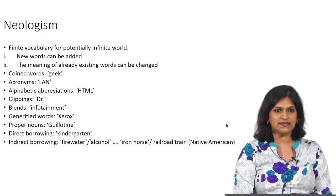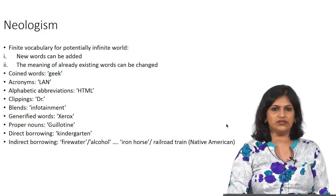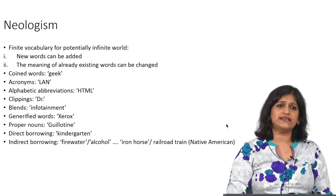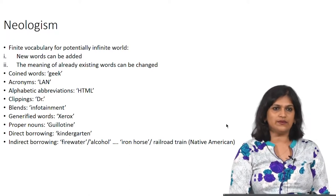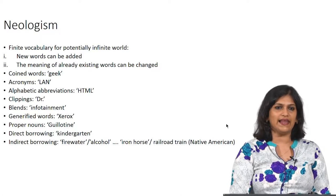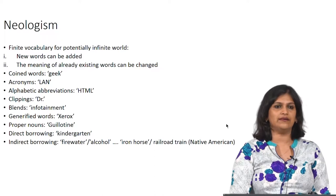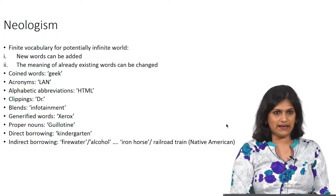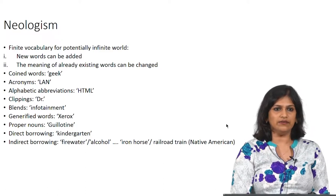Acronyms are formed by a process called acronymization. What you are doing is taking the first letter of each word and producing it as a unit. For example, LAN — this is an acronym for 'local area network.' Instead of saying 'local area network' we call it LAN. Similarly, WAN stands for 'wide area network,' and AIIMS stands for 'All India Institute of Medical Sciences.'